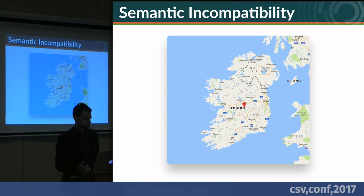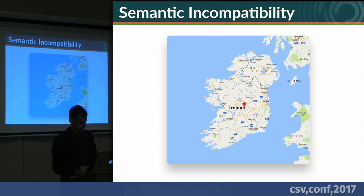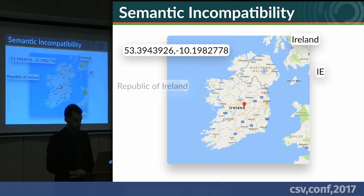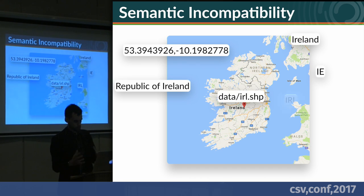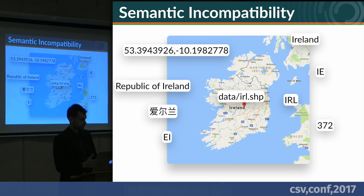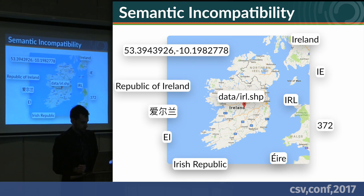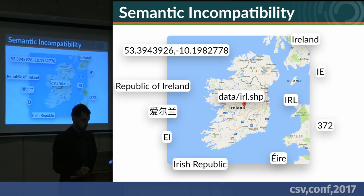Semantic incompatibility basically refers to having something — say, this island here — and having a ton of different ways to refer to it: an official or short name in the same language, different languages, one of many types of standard codes, proprietary codes, a set of coordinates, or even just a reference to a shapefile on a hard drive.